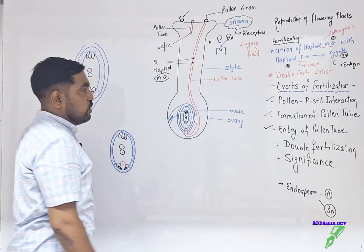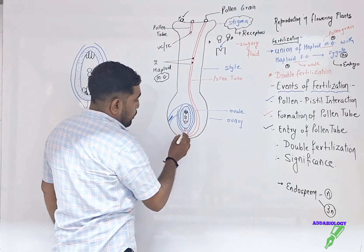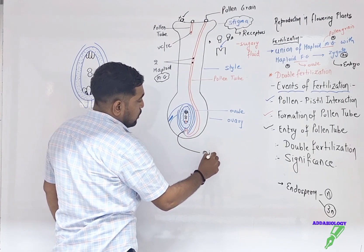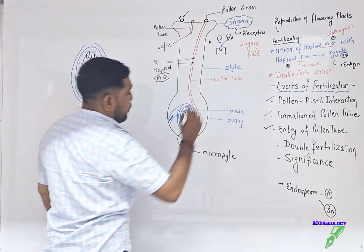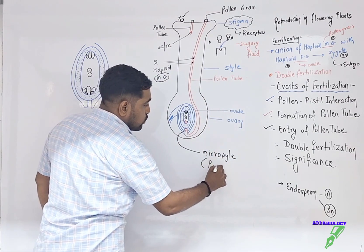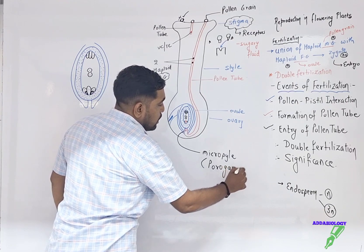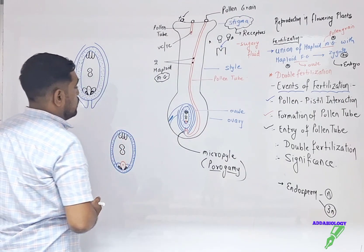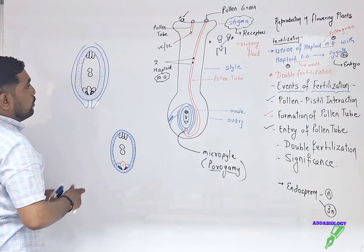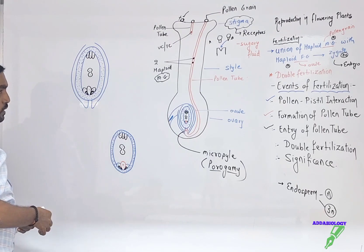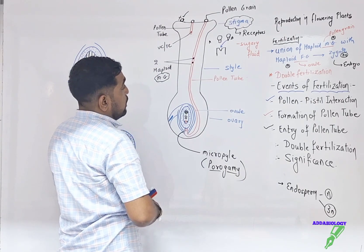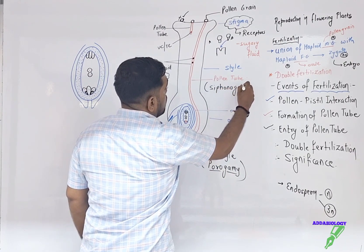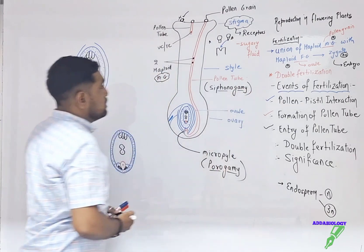Now comes the entry of the pollen tube. The opening of the ovule is called the micropyle. If the pollen tube enters through the micropyle, it is called porogamy — 'poro' means micropyle and 'gamy' means marriage. Since fertilization takes place with the help of the pollen tube, we can also call this siphonogamy — 'siphono' means pollen tube and 'gamy' means marriage.